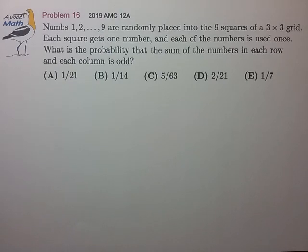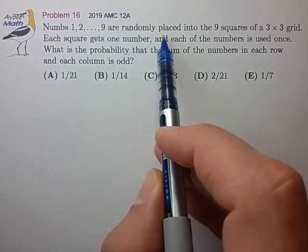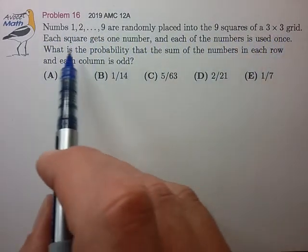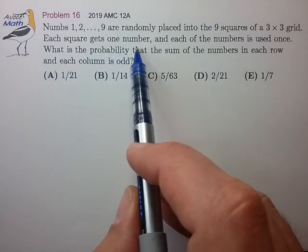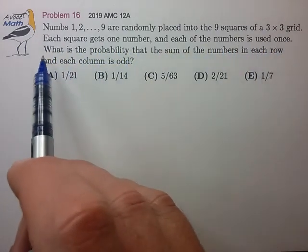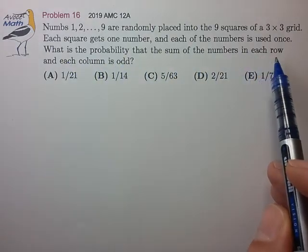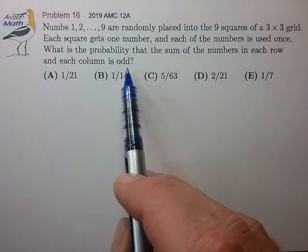Hi, this is problem 16 from the 2019 12A. Numbers 1 through 9 are randomly placed into the 9 squares of a 3x3 grid. Each square gets one number, and each of the numbers is used just once. What is the probability that the sum of the numbers in each row and each column is odd?